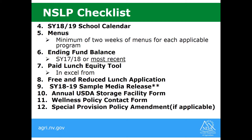Here is where the NSLP and RCCI checklists differ. For NSLP, the fourth item is your school calendar. We are also asking for menus — a minimum of two weeks of menus for each applicable program: breakfast, lunch, and snack. Then you must send in the ending fund balance; you may send in the 17-18, or if that has not been done yet, the most recent 16-17. We are also looking for the paid lunch equity tool, which we will go over later, and it must be sent in Excel form.